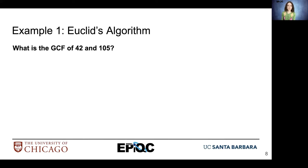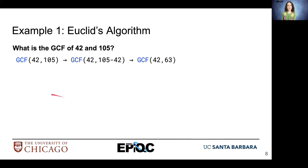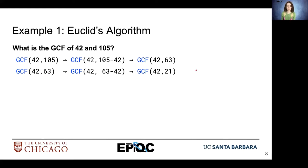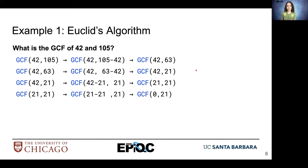Let's do an example. What is the greatest common factor of 42 and 105? We first determine the larger of the two — that would be 105 — and subtract the smaller from the larger. That transforms 42 and 105 to 42 and 63. We repeat the procedure until our numbers get smaller and smaller. At the point when we have 0 and 21, we stop. We know that the greatest common factor of 42 and 105 is 21.